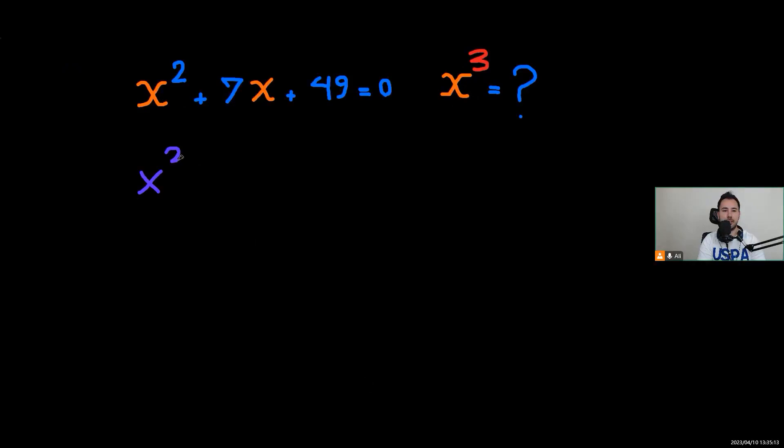So we're going to have x cubed plus 7x squared plus 49x equals zero. I think it makes sense also to keep x cubed on one side.